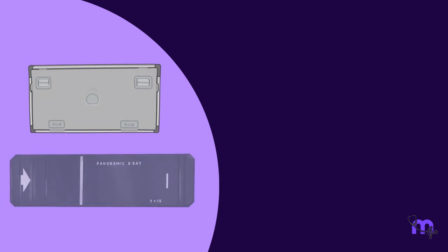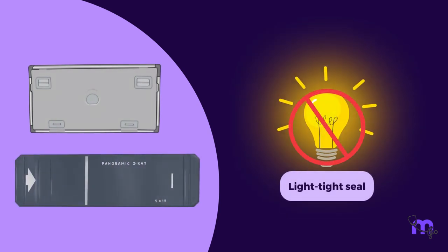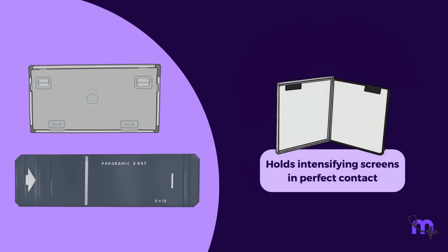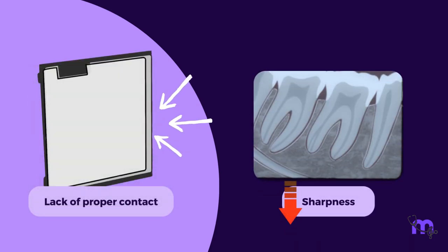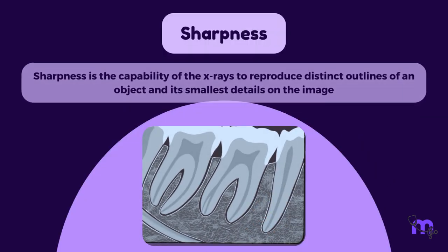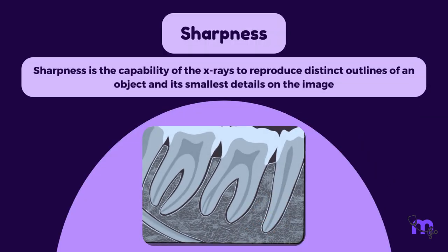Both rigid and flexible cassettes have to be light-tight to protect the extraoral film from exposure and to hold the intensifying screens in perfect contact with the film. A lack of proper contact results in reduced image sharpness. Sharpness is the capability of the X-rays to reproduce distinct outlines of an object and its smallest details on the image.